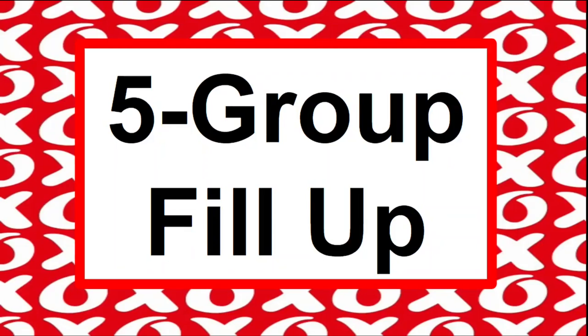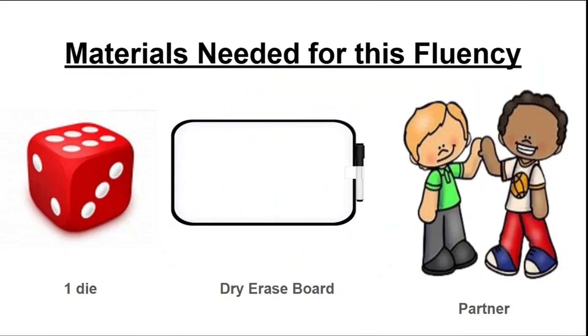This fluency is called Five-Group Fill-Up. For this fluency, you'll need a die, a dry erase board, and a working partner.